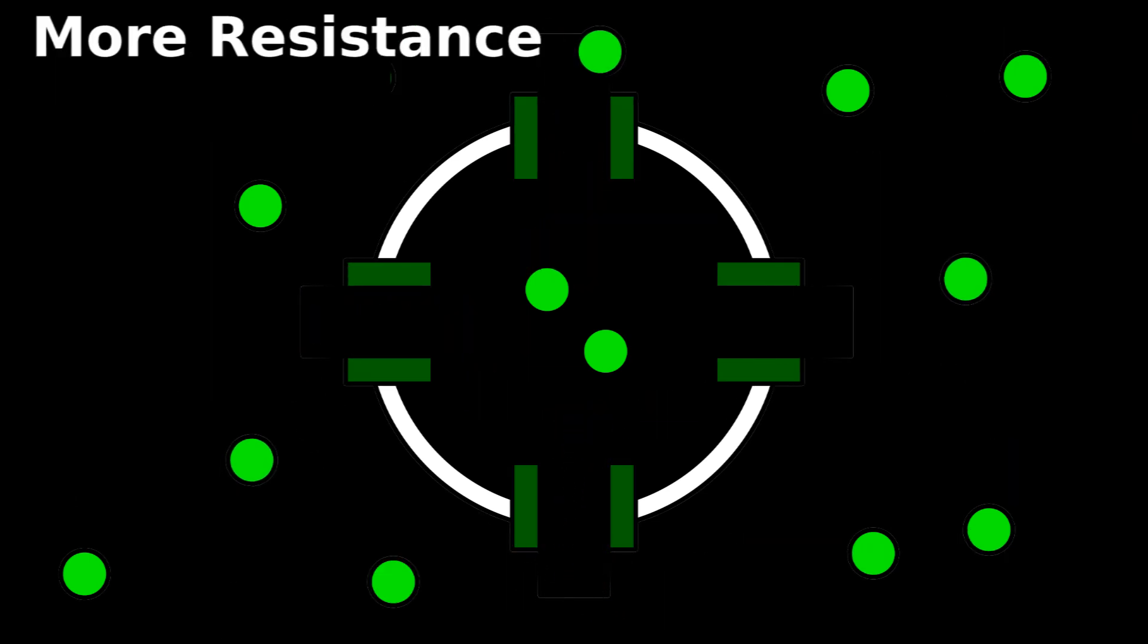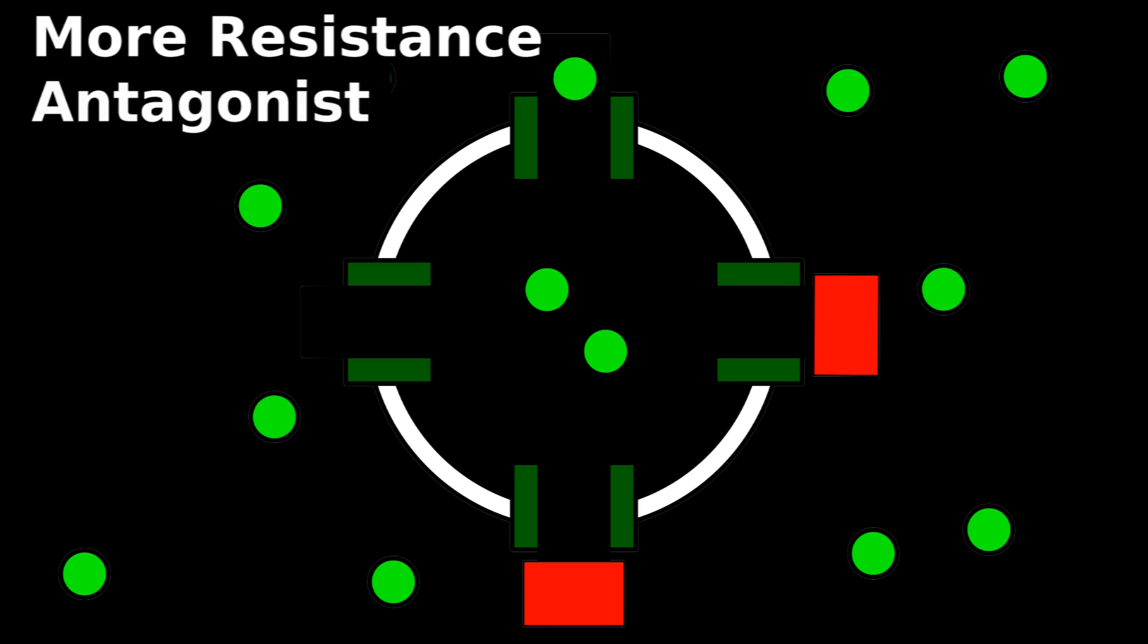If you increase resistance by blocking channels with an antagonist, the signal will be conducted more slowly. Ohm's law doesn't just apply to electrical systems.